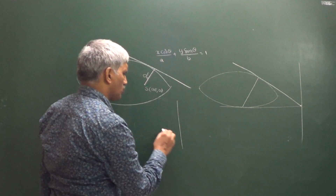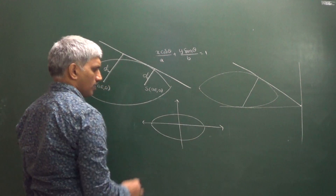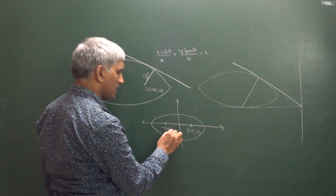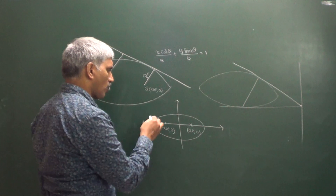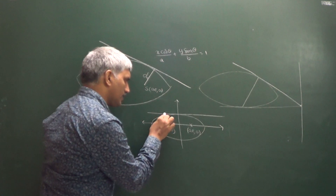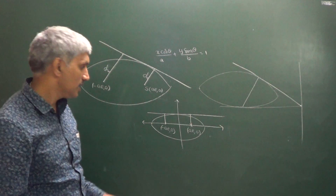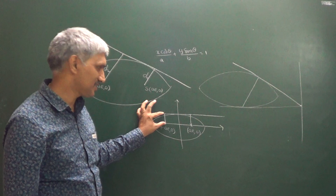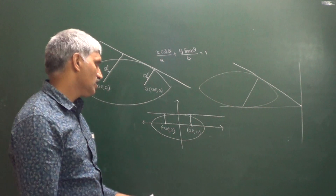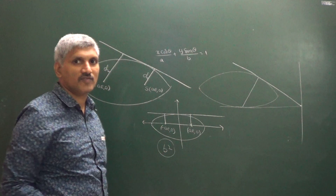We can discuss this easily in a special case. Drawing the tangent at the end of the minor axis: the perpendicular distance from one focus to this tangent is the semi-minor axis, and the distance from the other focus to the same tangent is also the semi-minor axis. The product of these two perpendicular distances equals B².